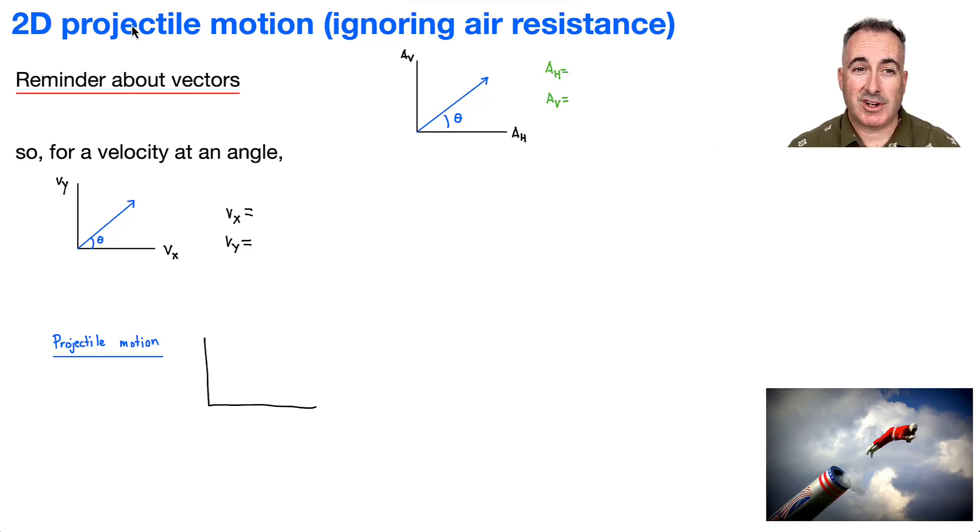Let's talk about 2D projectile motion. We're going to be ignoring air resistance in this case. I imagine someone being launched out of a cannon at some angle. Your actual path, the projectile motion if you're launched upwards, would be some sort of nice parabola.